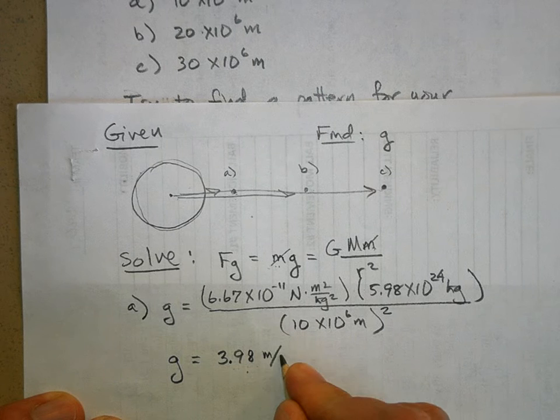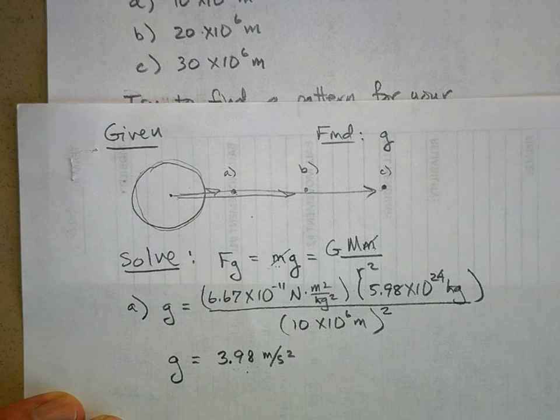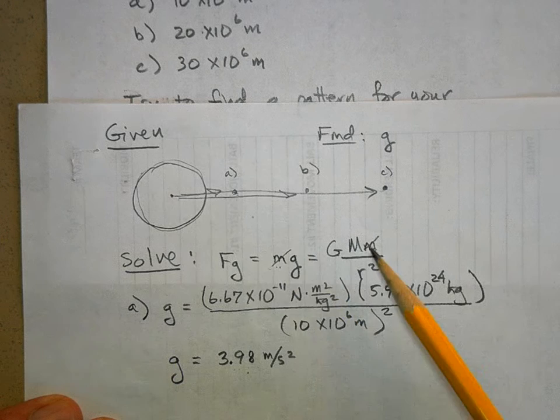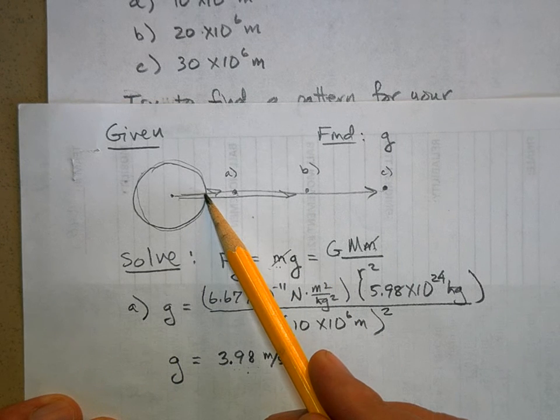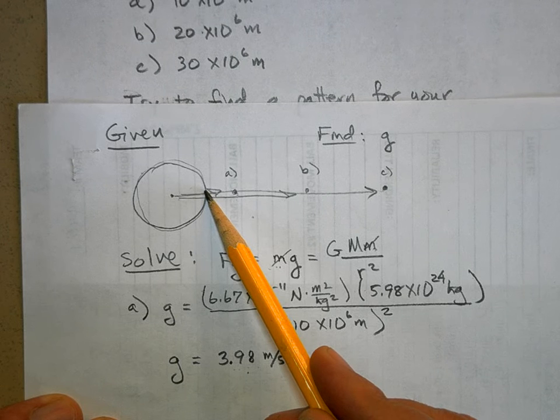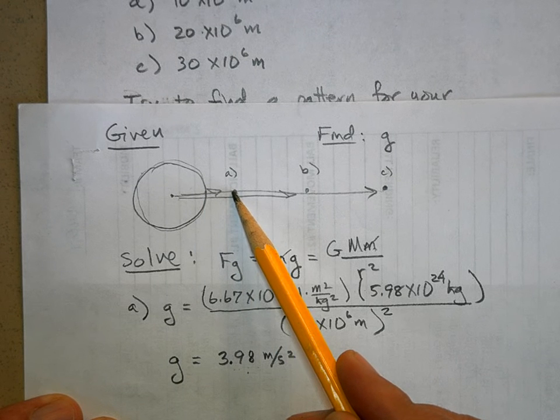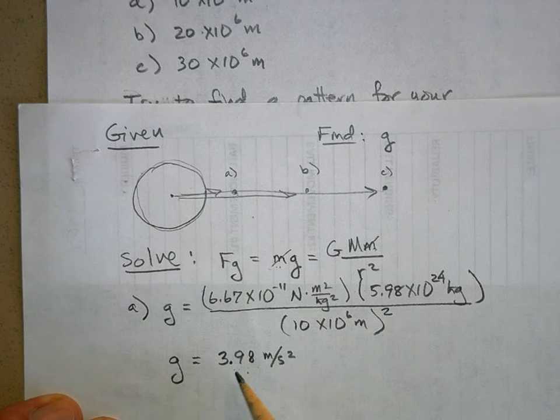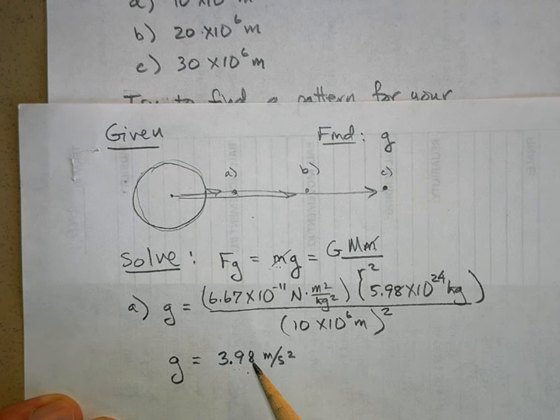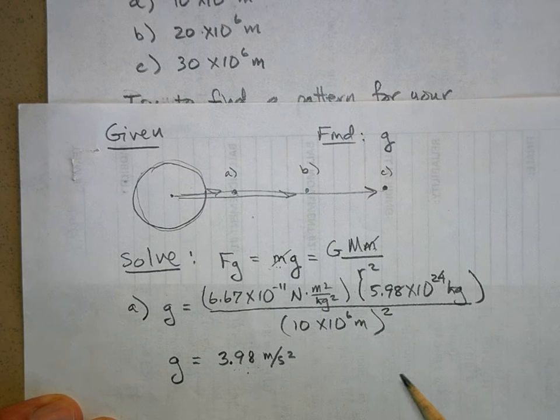That's 3.98 meters per second squared. Now take a look at this. If you were sitting on the Earth's surface, it would be 9.8 meters per second squared, but now you're quite a bit above the Earth and it's gotten a lot weaker. It's a little less than half of what it is at the surface.